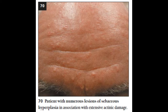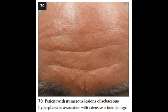Sebum production remains largely unchanged until the 8th decade in men, while that in women starts to gradually decrease after menopause until a nadir in the 7th decade. Sebaceous glands secrete sebum in a holocrine manner, with sebocyte disintegration and subsequent release of intracellular contents. As a result, glandular cells are completely renewed every month.